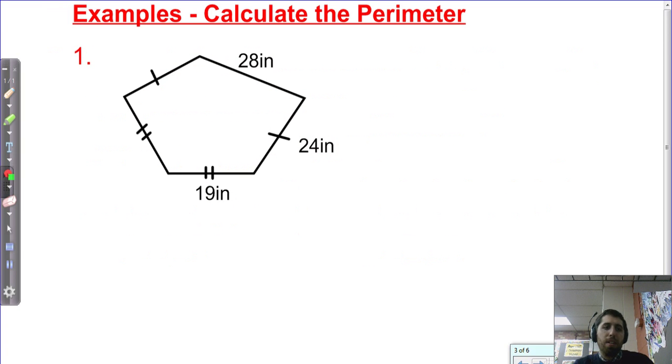Let's see some examples. This first one uses hash marks to show you that some of these sides are the same length. The sides that have one hash mark we see are 24 inches, so we can fill this in right away. And the ones that have two hash marks are 19 inches. If I'm just calculating the perimeter, I can add these numbers.